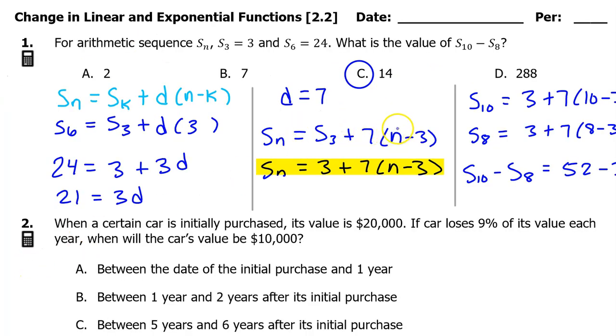By the way, here's a shortcut we could have used. Once we found that the common difference is 7, we could notice that term 10 is two terms away from term 8, so the common difference will be applied twice, which gives us 14.